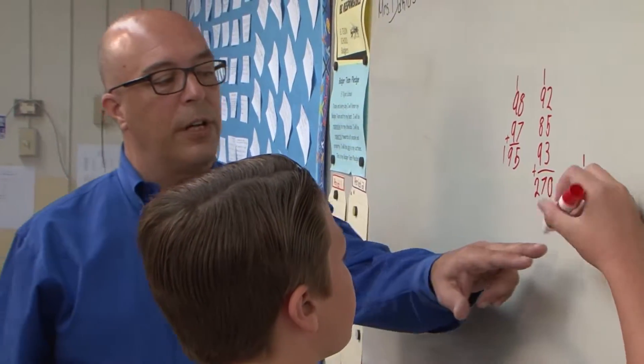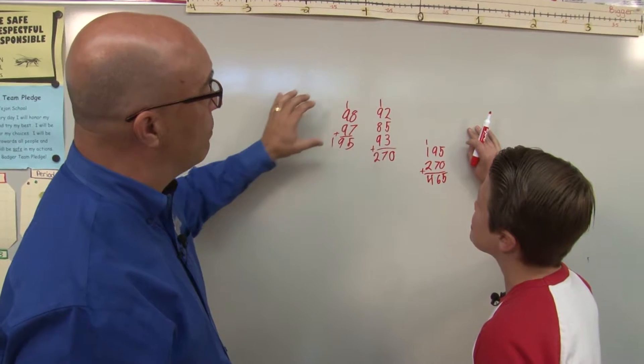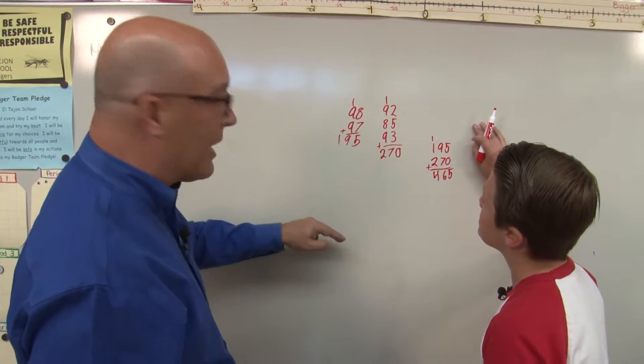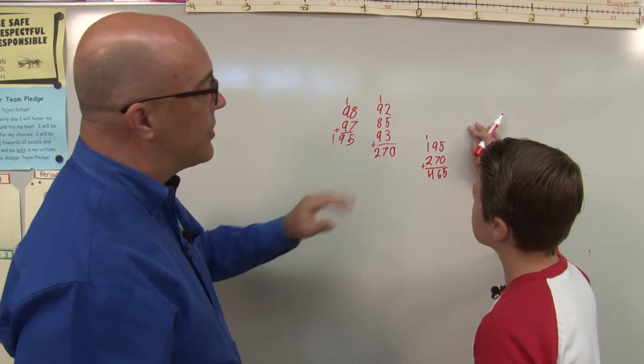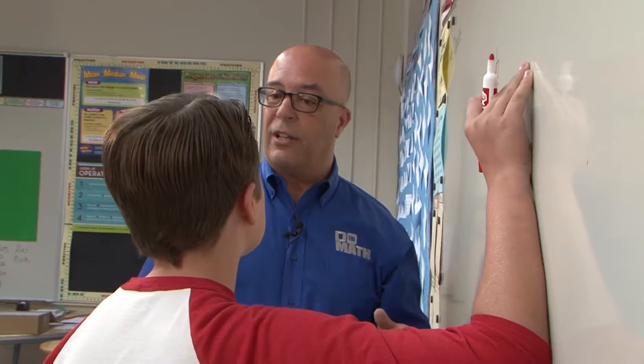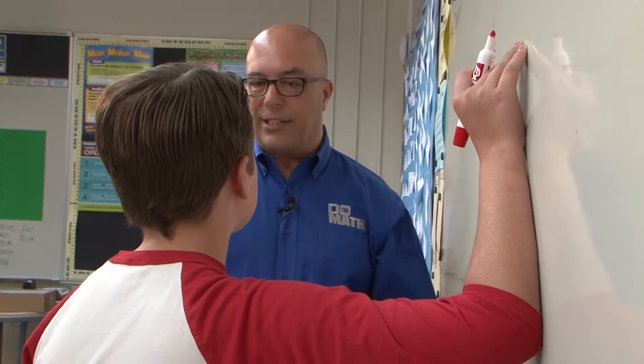So the total is 465 out of all of these. And what I like is how you broke this up into chunks. Instead of adding a lot of numbers, you just broke it up to make it a little easier. So now we have 465, but we want to know the average of your scores. So let's say they put it on the report card, they want to know what you average. What's the next step?